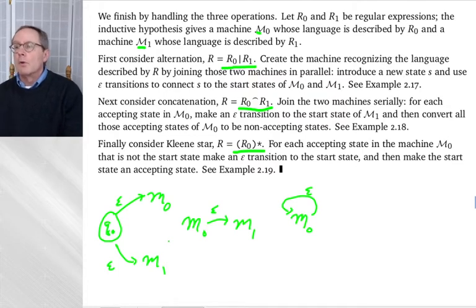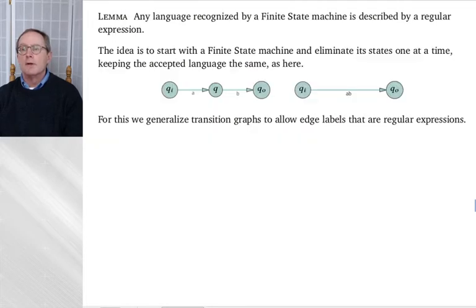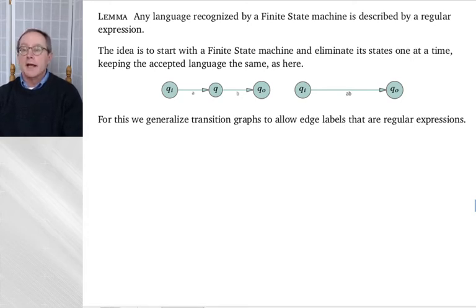If you give me a regular expression, I can look at how it's decomposed. If the outermost operation is a vertical bar, I do the parallel construction. If it's concatenation, I do the serial construction. If it's a star, I do the loop construction. So given a regular expression, I can produce the associated finite state machine. The second half is to show that given a finite state machine, there's an associated regular expression.